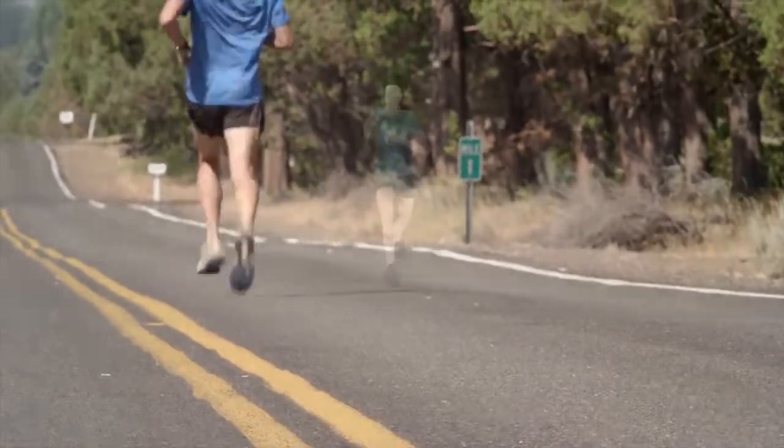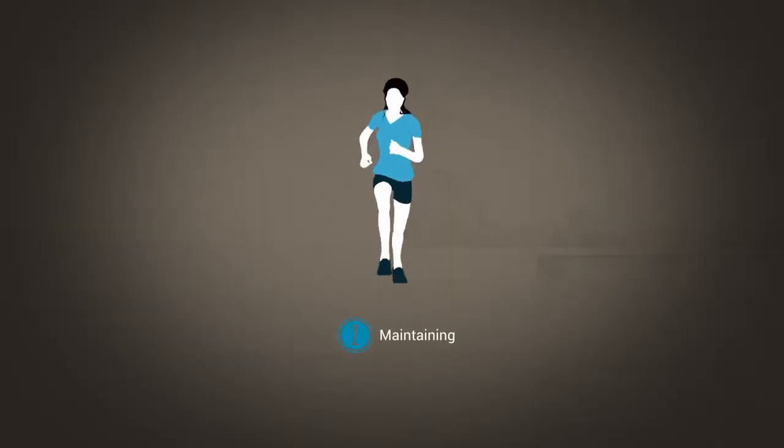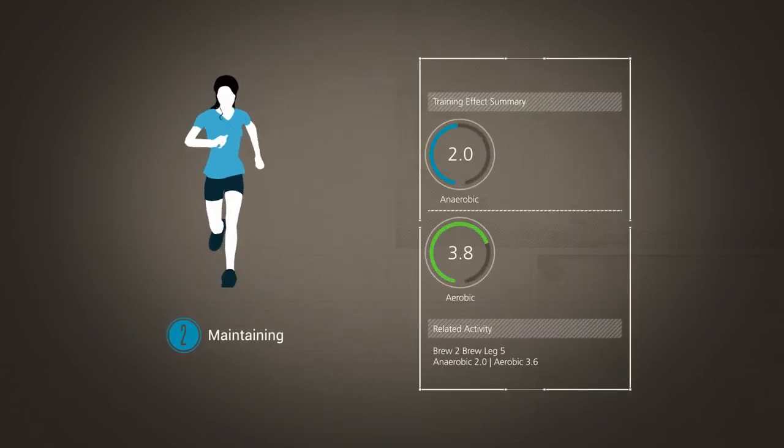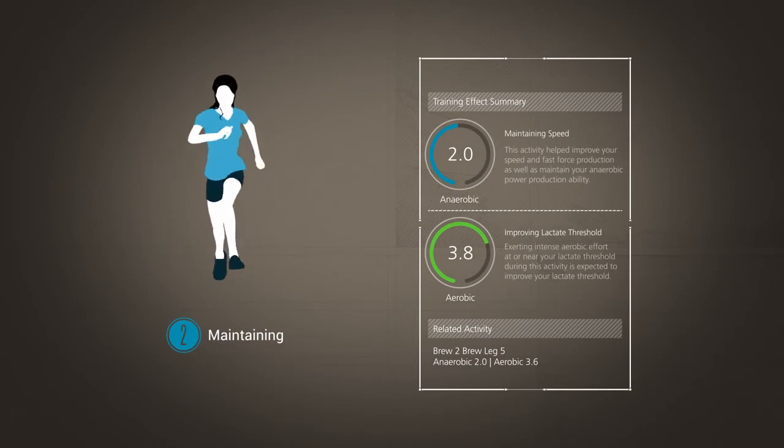For example, if you have an overall low training effect, but a few very fast intervals are detected, your anaerobic training effect may be 2 and will be accompanied by a message on Garmin Connect. It will indicate that your workout had a positive effect on your speed and power production, even though the overall anaerobic training effect was only a 2, which is maintaining.